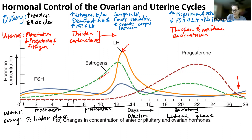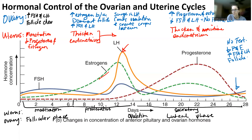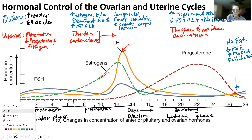If there's no fertilization, what ends up happening is we have a decrease in progesterone and estrogen. We start increasing FSH and LH and follicle development. Because progesterone and estrogen decreased, we're going to start menstruation.